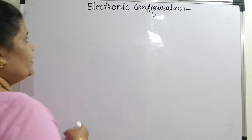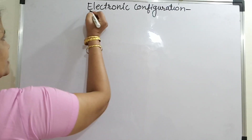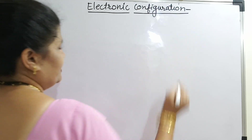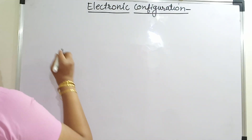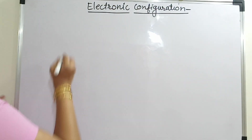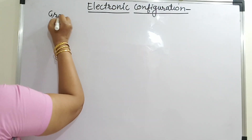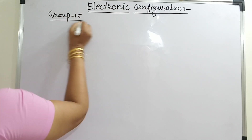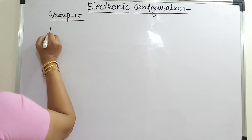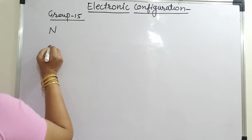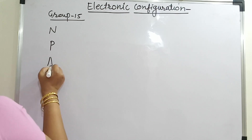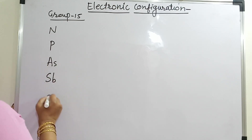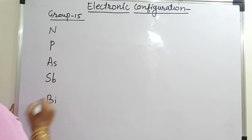In this video, we are going to see the electronic configuration of P-block elements. Let us come to group 15. The elements in group 15 are nitrogen, phosphorus, arsenic, antimony and bismuth.